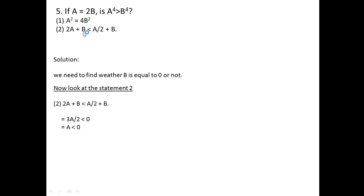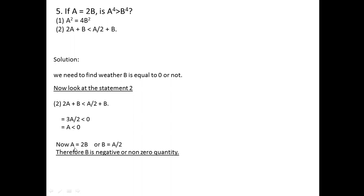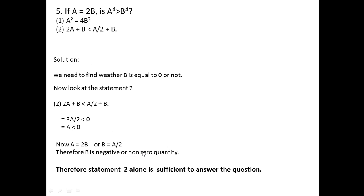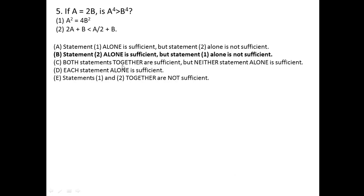Statement two says 2a + b < a/2 + b. Cancelling b from both sides gives 2a < a/2, or 3a/2 < 0, so a < 0. Since a = 2b and a is negative, b = a/2 is also a negative quantity. Therefore b is non-zero, and 15b⁴ is obviously greater than 0. Statement two alone is sufficient. The right answer is option choice B — statement two alone is sufficient but statement one alone is not sufficient. That was all for flash test 2. Hope you are enjoying this.